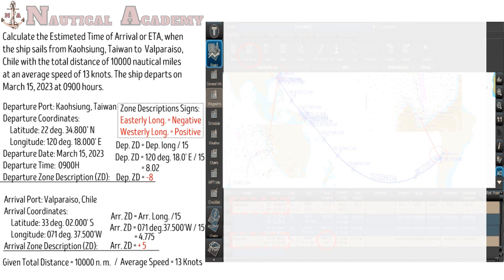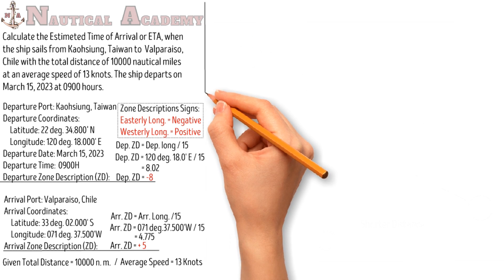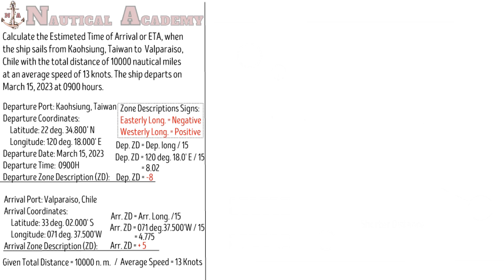So the next step we will do is to determine the ship's steaming time from departure to arrival port. Steaming time will be the number of days, hours, and minutes that a ship will travel from departure to arrival point. It is also known as the crossing time. We will use a magic triangle which is commonly used by mariners to find a formula in determining the distance, speed, and steaming time.